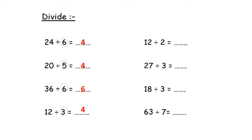Another example: 12 divided by 2. Circle the number after the sign — this is table 2. So close your hand and sing the song of table 2 until I get 12. The number of fingers will be the answer. 2, 4, 6, 8, 10, 12 — they are how many fingers? 6. So the answer will be 6.